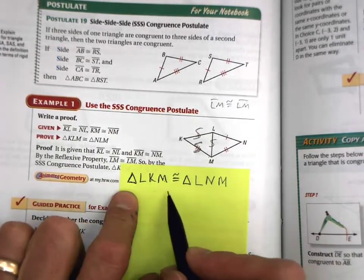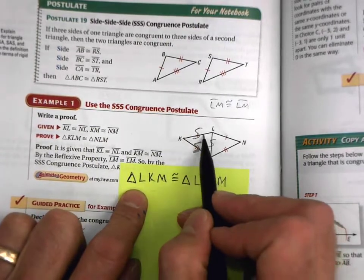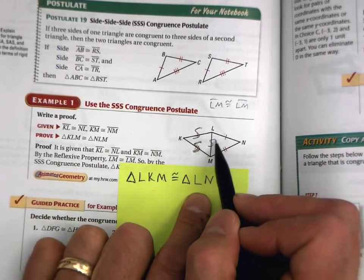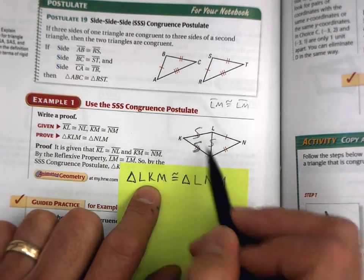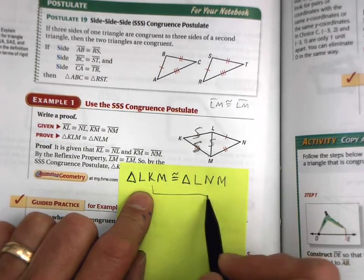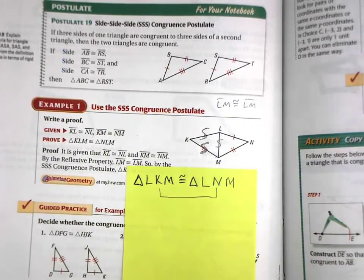So the order really does matter, because we're saying that angle L on the left-hand side here is congruent to angle L on the right-hand side. And also that angle K is congruent to angle N, because they're both in the second position. See how that works?